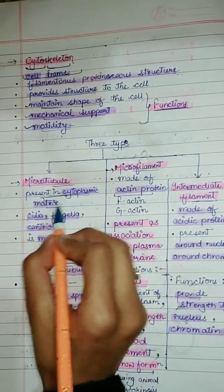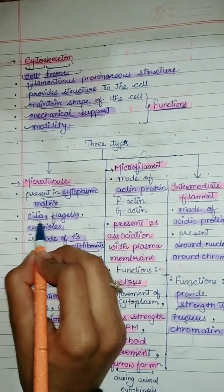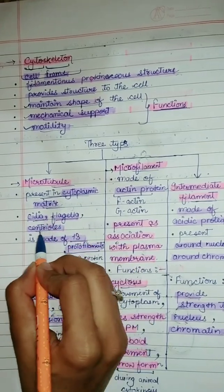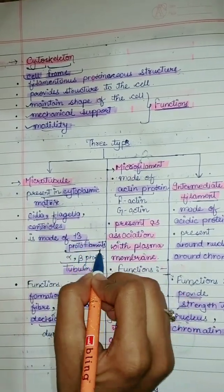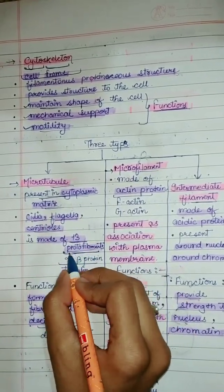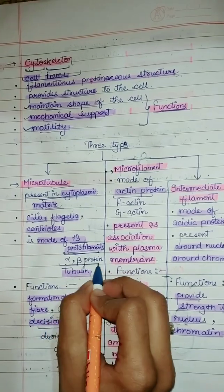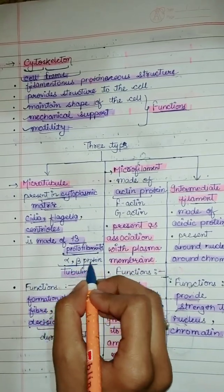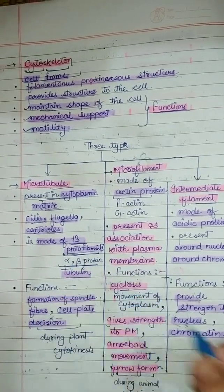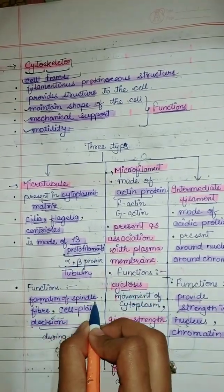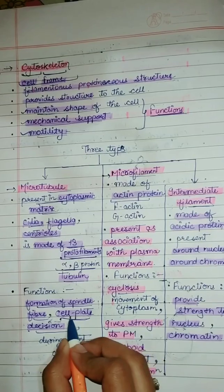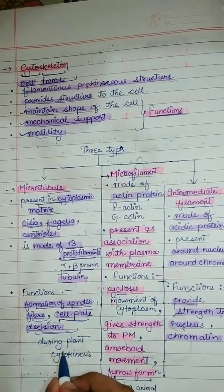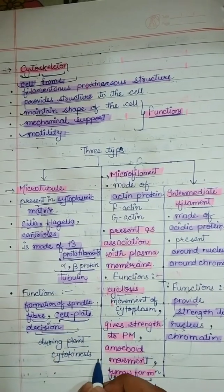Microtubules are present in the cytoplasmic matrix, in cilia, flagella, and centrioles. They are made of 13 protofilaments, and these protofilaments are made of alpha and beta tubulin protein. The function of microtubules is to form spindle fibers. They also help in cell plate formation during plant cytokinesis.